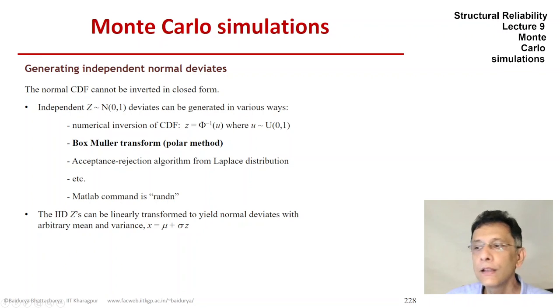And then once we have a standard normal deviate, it's trivial to convert it to any arbitrary normal because we can always multiply that standard normal Z with sigma and add mu to that and we get a normal with mean mu and standard deviation sigma.